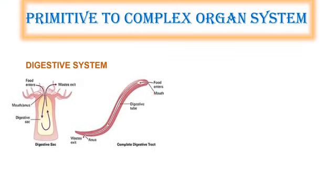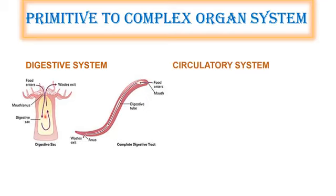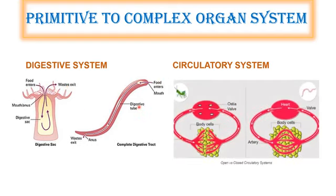The evolution of mesoderm has led to the complexity of the organ system in animals. For example, in the digestive system, as seen in cnidarians, there is a single opening for food intake and excretion — the anus is the same opening. But in higher organisms, from Ascelminthes to chordates, there are two different openings for food as well as anus, forming a complete digestive tract.